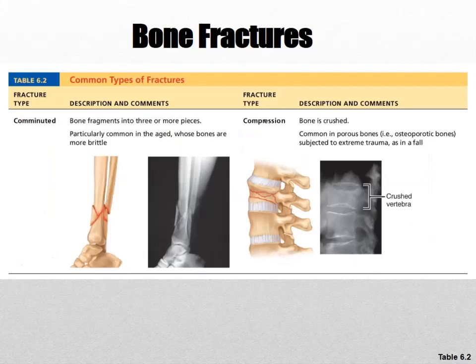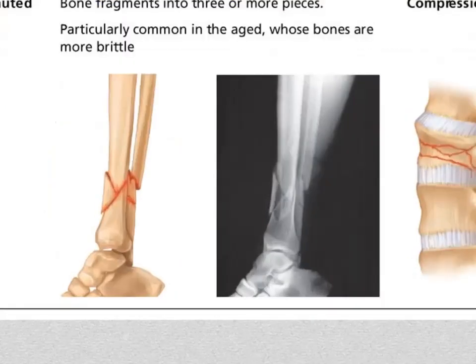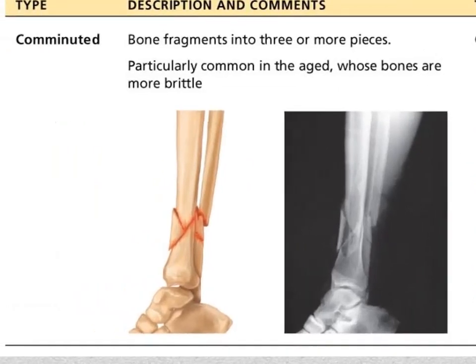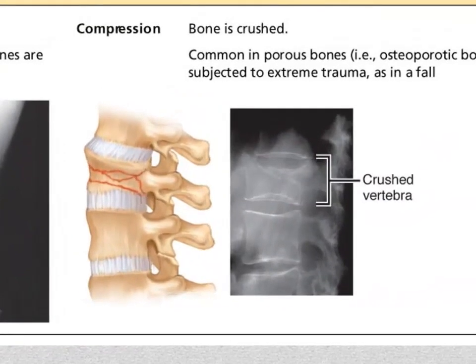Looking at some X-rays: there's a nasty fracture near the ankle. That's an example of a comminuted fracture in fragments. This is an example of a compression fracture — one of the spinal vertebrae was crushed. Typical with osteoporosis. People don't even know it — they may have stepped off a curb wrong, or slipped and fallen. You don't really know it until you see an X-ray. People think they have back pain when really they broke a vertebra and never knew it.